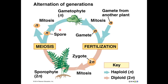We touched on this in the protists chapter, but let's now look at it in the context of an actual organism — a fern. In this figure, the blue arrows show haploid, or one set of chromosomes, and the pink shows diploid, or two sets of chromosomes.